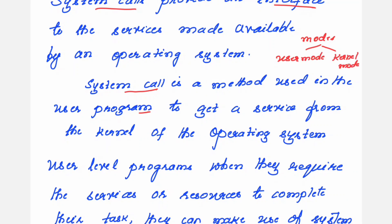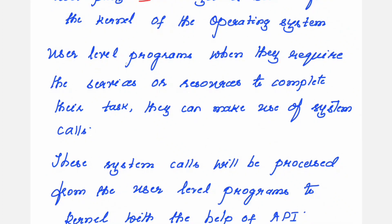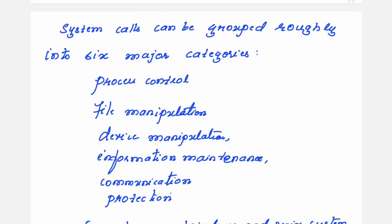Kernel is the heart of the operating system. Kernel mode has direct access to resources, that is the memory, but user mode does not have direct access to the memory. User level programs, when they require services or resources to complete their task, they can make use of the system calls. Here I will be showing you the interface that exists between the user mode and the kernel mode.